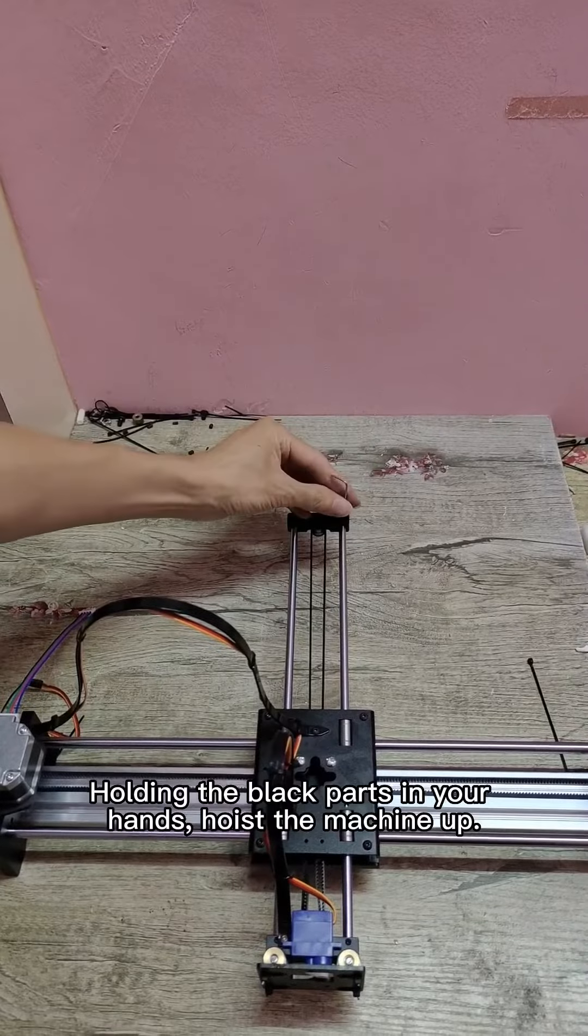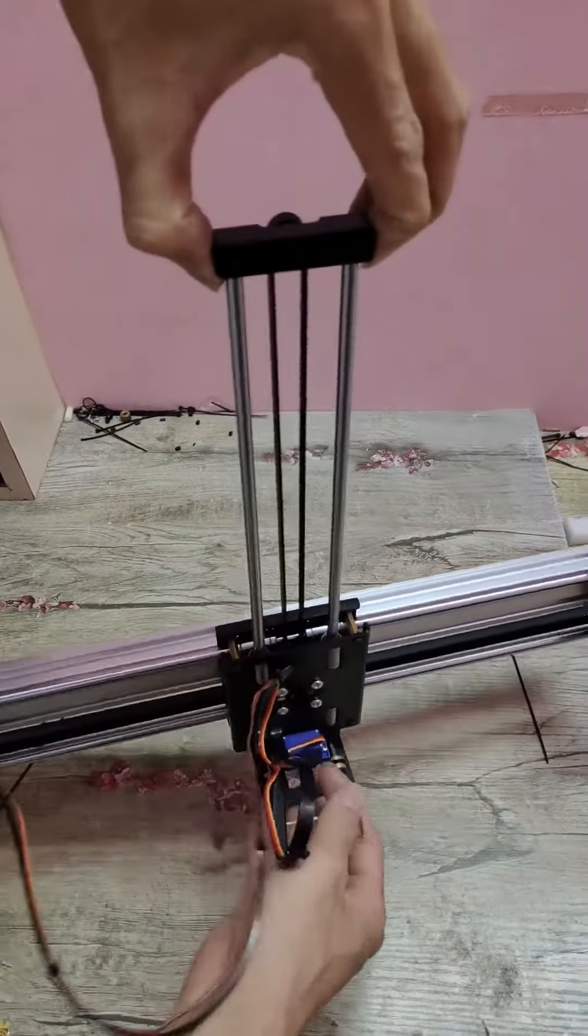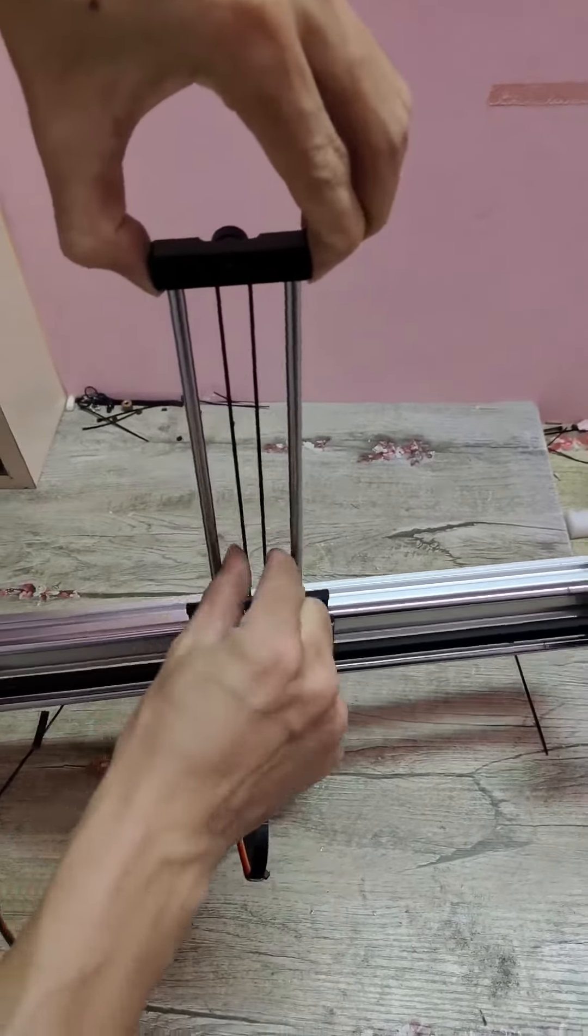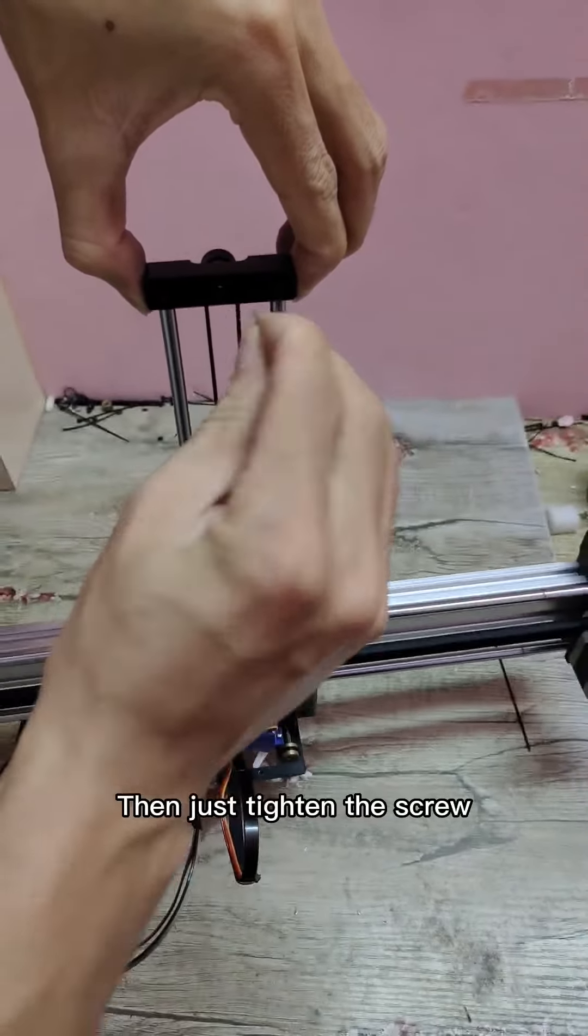Holding the black parts in your hands, hoist the machine up. The belt will automatically tighten. Then just tighten the screw.